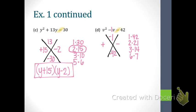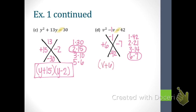The signs are different so we'll be subtracting. Which set of factors can we subtract to get negative 1? The 6 and the 7. Which is positive and which is negative? The answer we're trying to get is negative 1, so the larger factor must be negative — that's the 7. Double check: 6 minus 7 is negative 1, which is exactly what we needed. Final answer: V plus 6 times V minus 7. We take V squared, give a V to each binomial, and drop the plus 6 and the minus 7.